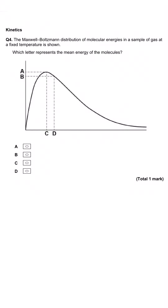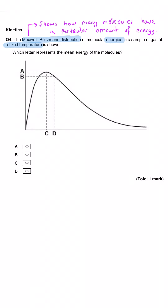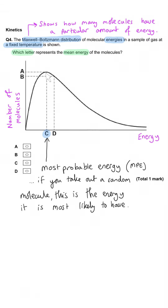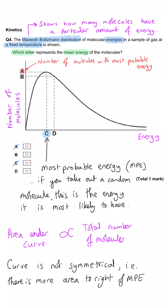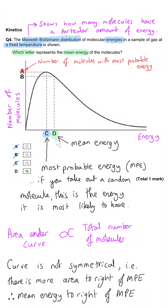The Maxwell-Boltzmann distribution of molecular energies in a gas at fixed temperature is shown. Which letter represents the mean energy of the molecules? The y-axis is the number of molecules with a particular energy; the x-axis is the energy. C is the most probable energy — the peak of the curve — and A is the number of molecules with that energy. Because the curve is not symmetrical, there is slightly less curve to the left of the peak, so D represents the mean energy and B is the number of molecules with that mean energy. D is correct.